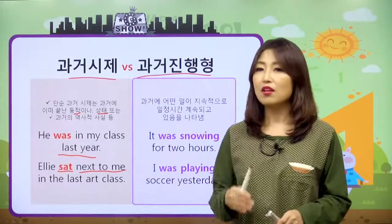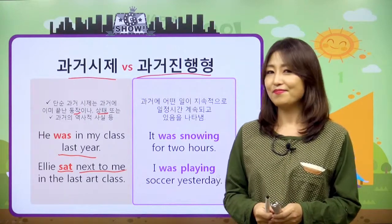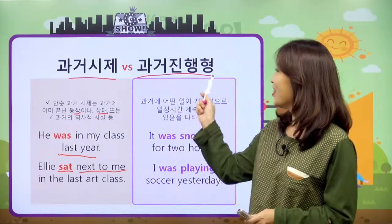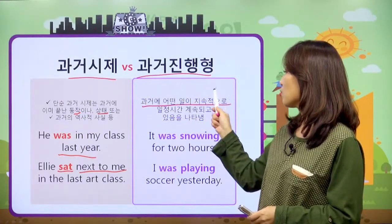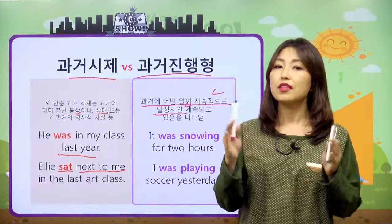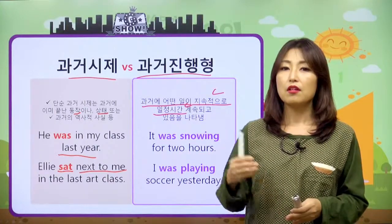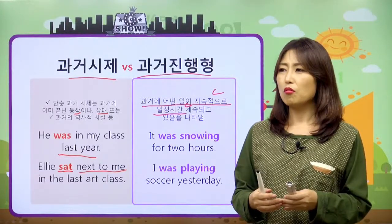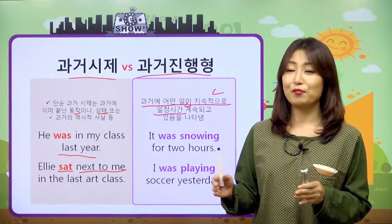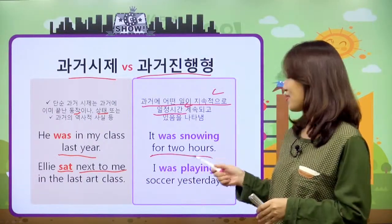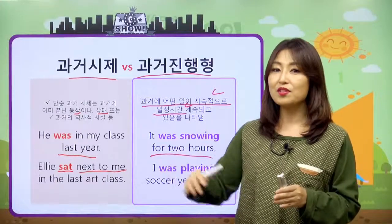역사적인 사실로 에디슨 얘기도 했었고, 미국의 16대 대통령 얘기도 했었죠 — 31강을 참조하세요. 과거 진행형은 과거에 어떤 일이 지속적으로 일정 시간 계속되고 있음을 나타내요. 예를 들어 'It was snowing for two hours' — 두 시간 동안 계속 눈이 왔어. 이렇게 두 시간 동안 눈이 지속적으로 내리고 있었다는 얘기죠.